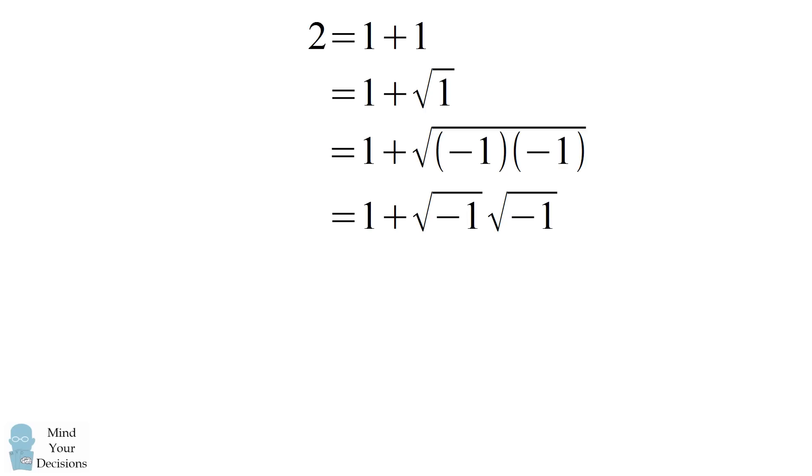We now take the square root of each term. The square root of negative 1 is equal to the imaginary number i. We have i times i, which equals i squared, and i squared is equal to negative 1. In the end, we have 1 plus negative 1, which equals 0, and all of this is equal to 2. So we have proven that 2 is equal to 0.